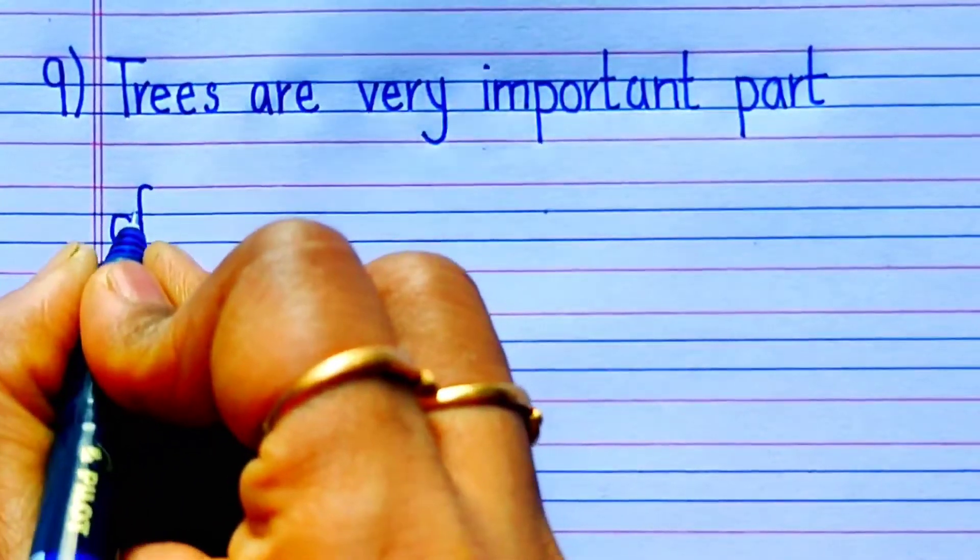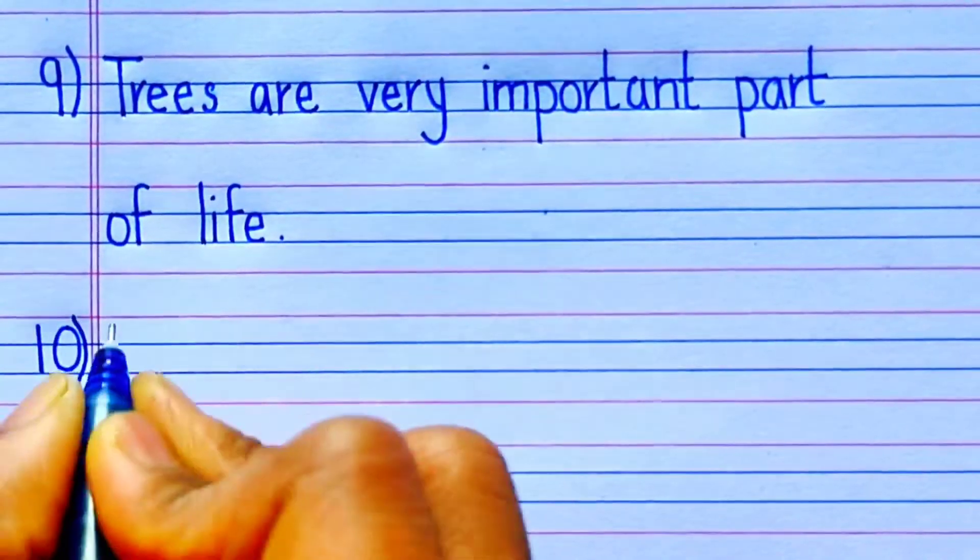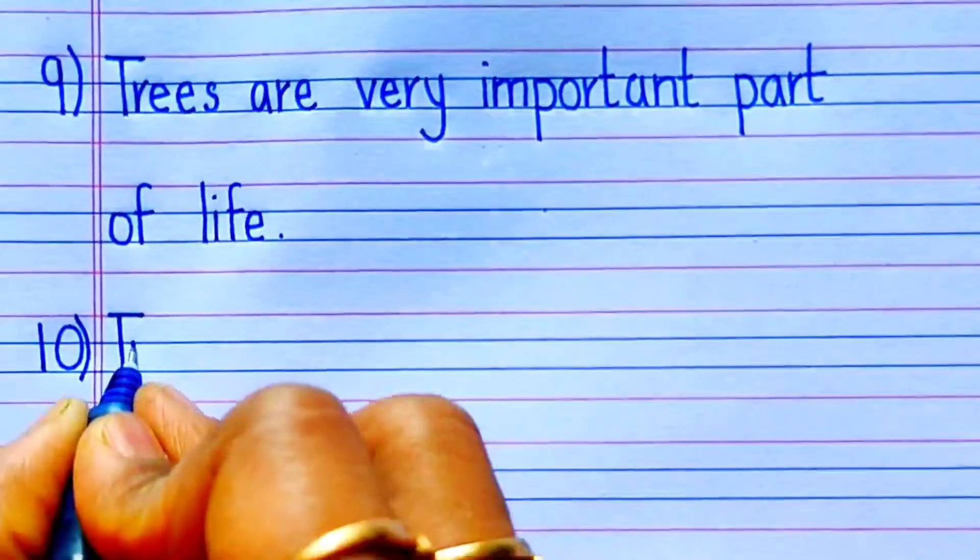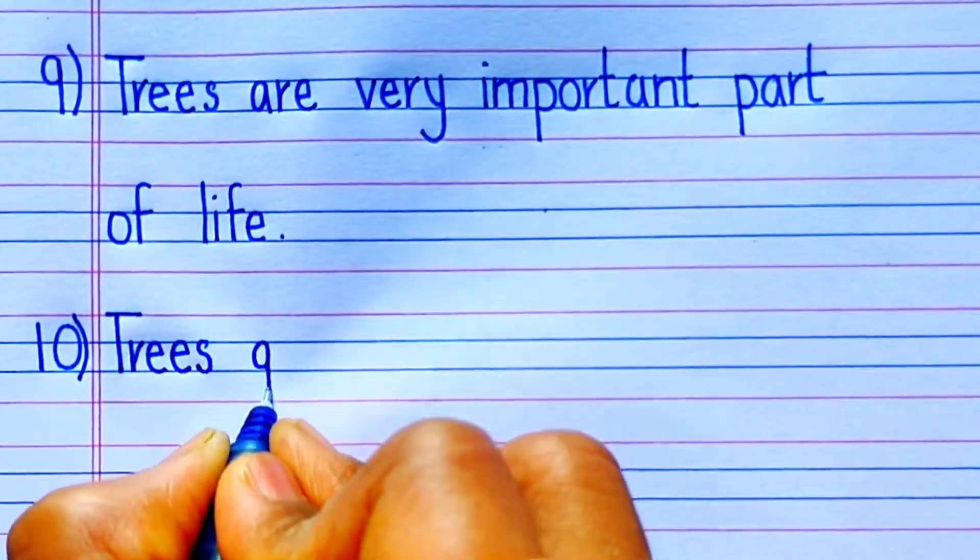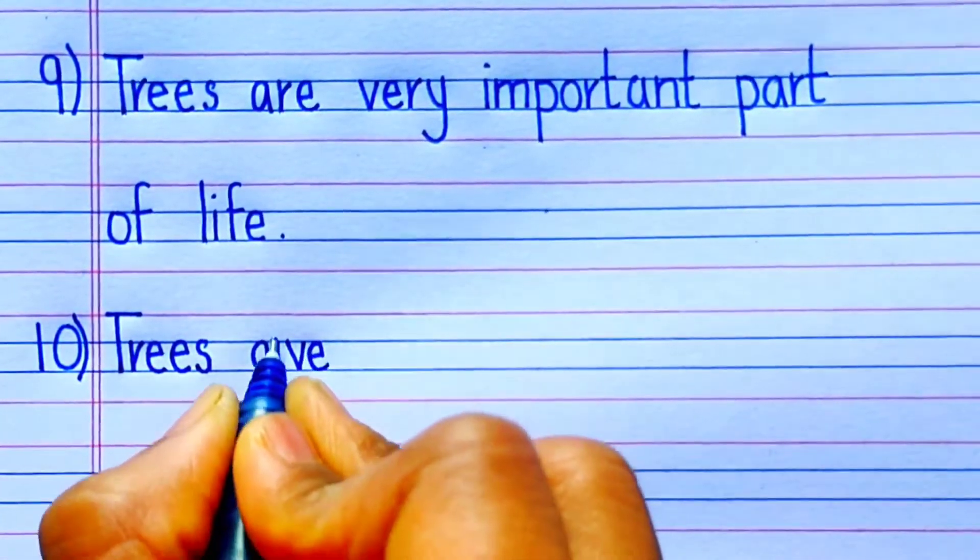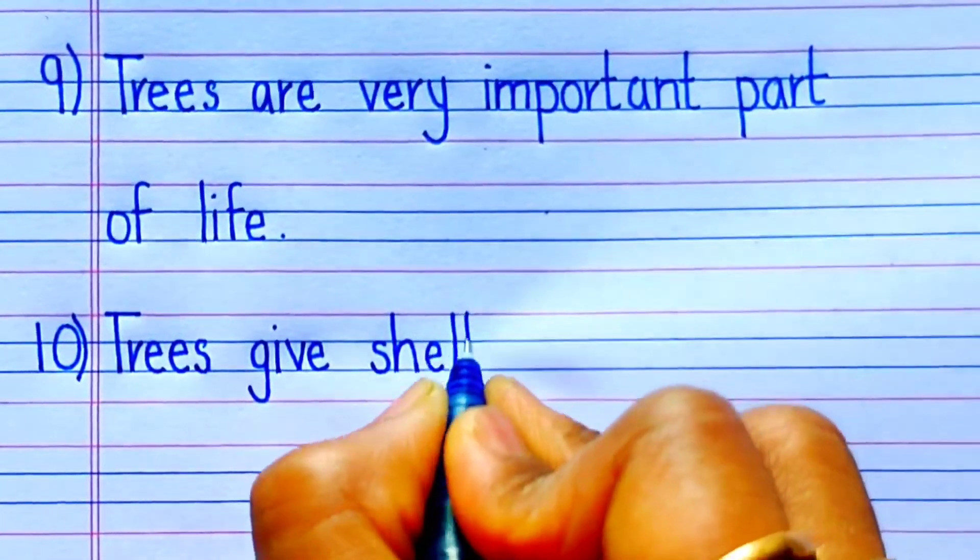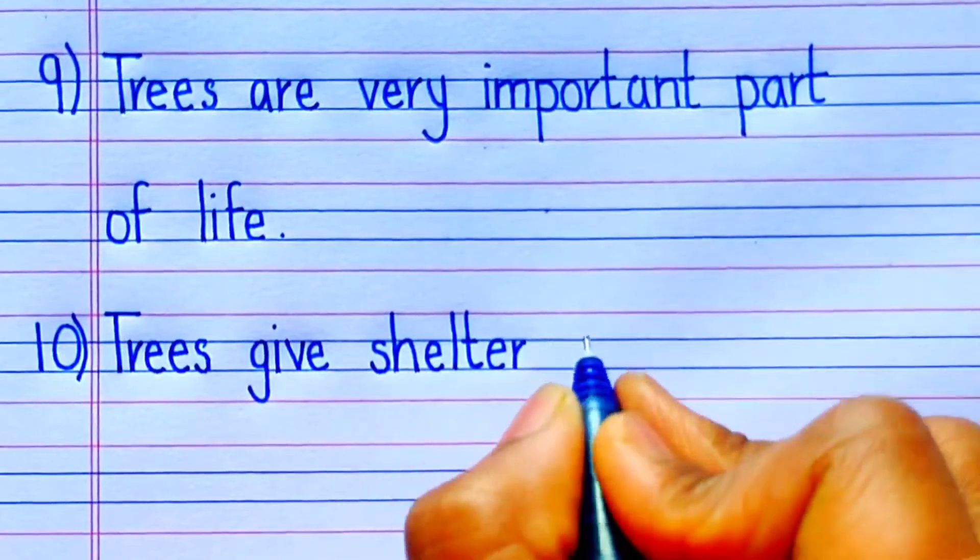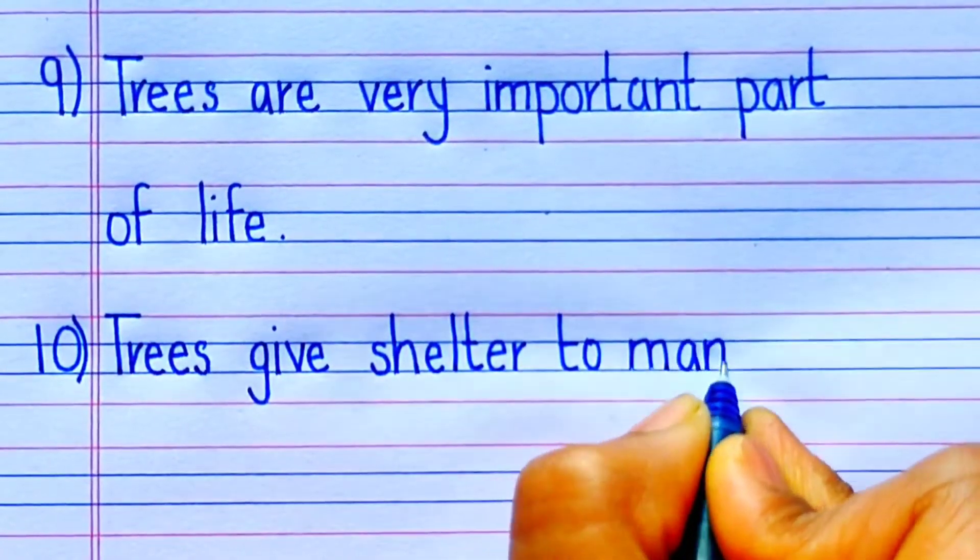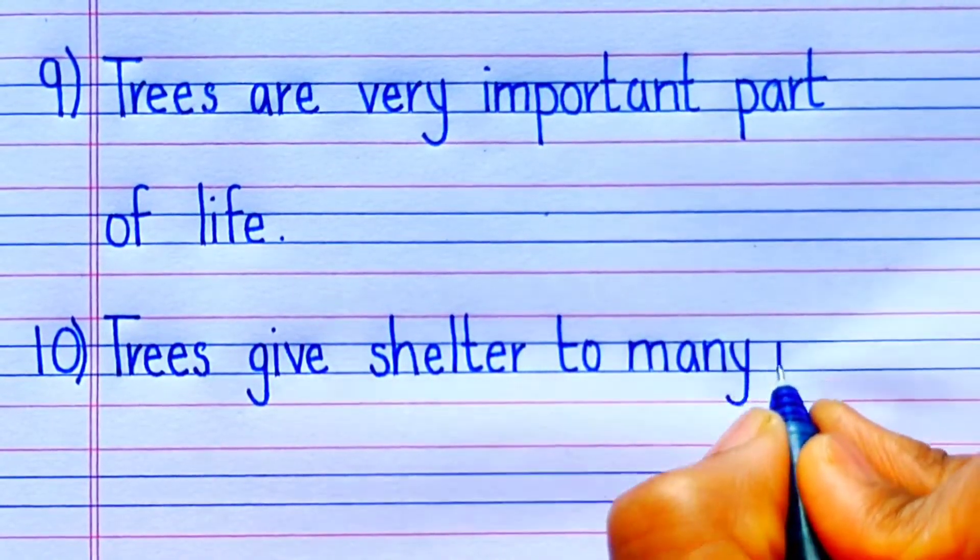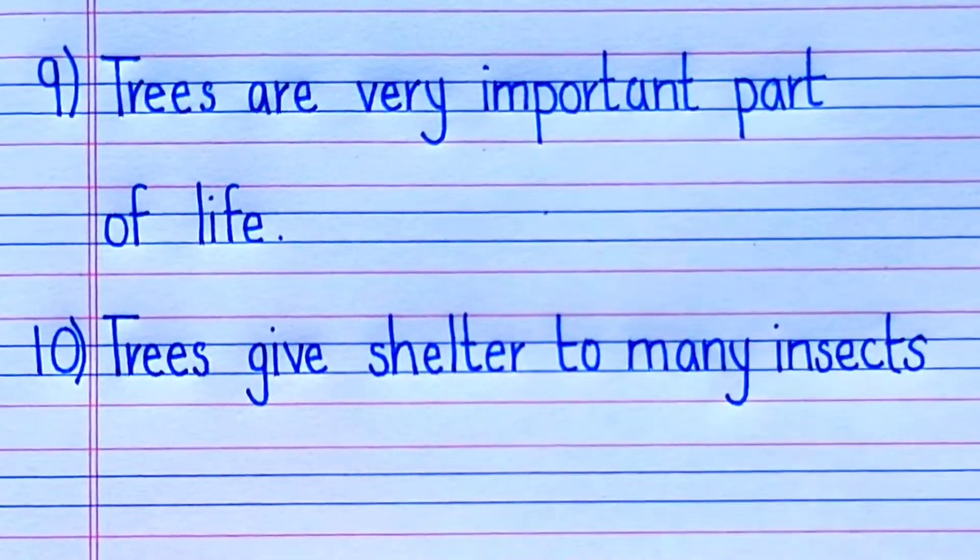The ninth point is: Trees are a very important part of our life. The tenth point is: Trees give shelter to many insects and small animals.